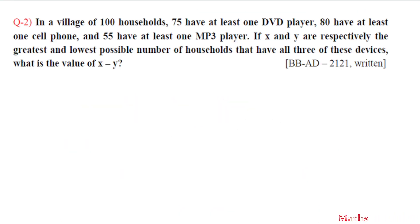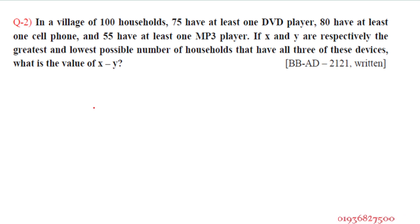Question number two: In a village of 100 houses, 75 have at least one DVD player, 80 have at least one cell phone, and 55 have at least one MP3 player. If X and Y are respectively the greatest and lowest possible number of households that have all three of these devices, what is the value of X minus Y?